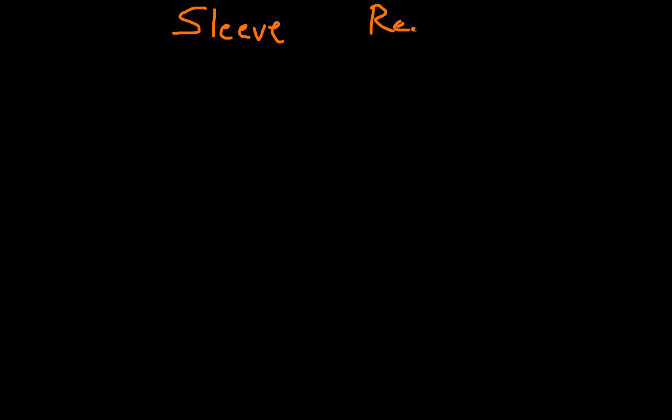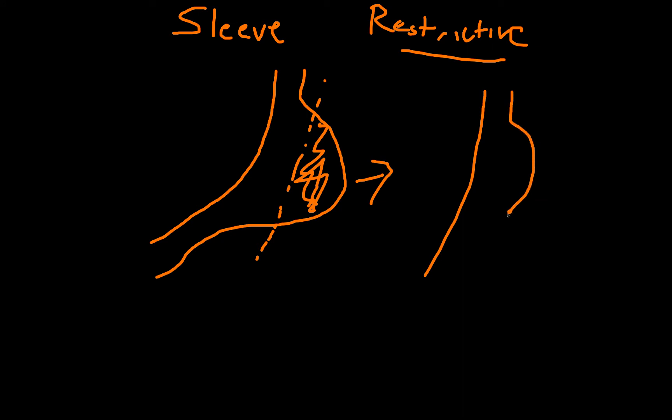The gastric sleeve is a simpler procedure so it's going to be a little bit easier to draw out. The sleeve is a restrictive procedure only. This really just takes place at the stomach. It's called a vertical sleeve gastrectomy, so we essentially make a vertical gastrectomy and take off the greater curvature of the stomach. We're left with a stomach that's described as banana-shaped, so you can imagine that the amount of space that food has to accumulate in the stomach is much smaller.